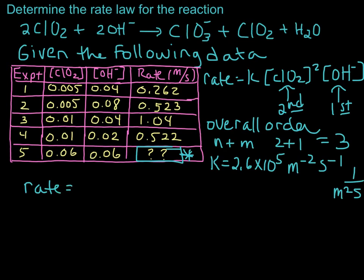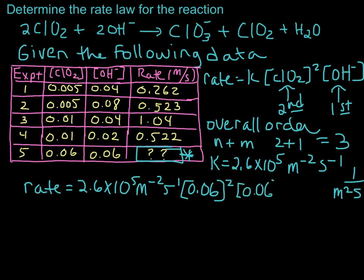Rate is equal to, let's plug in our rate constant, 2.6 times 10 to the 5th molar minus 2 seconds minus 1, and we're going to plug in 0.06 squared, so 0.06 molar squared, 0.06 molar for hydroxide.